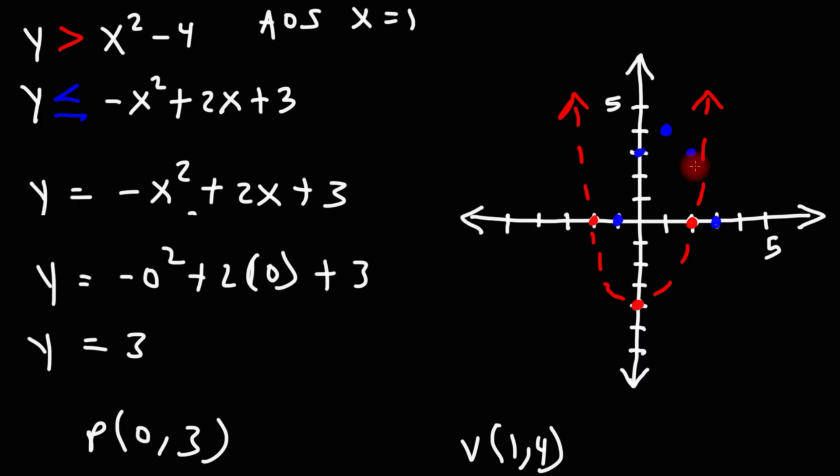So we have a similar point, which is going to be 2 comma 3. If you plug in 2 for x, you should get 3 for y. But this is enough to graph it.